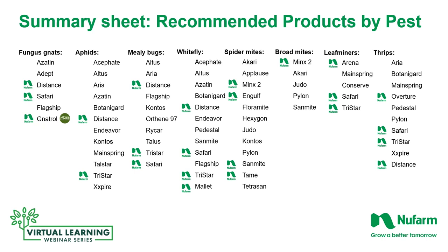Here again is the summary sheet for key insect pests of greenhouse production — make a copy and keep it as a reference. All of the active ingredients listed are recommended by independent researchers and labeled for the identified pests. New Farm products are well represented, providing you with tools to complete your job as a grower. Thanks for reviewing this information and look for more detailed learnings based on your feedback. Visit us for more information at newfarm.com/us-turf/production/ghn_solution.